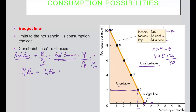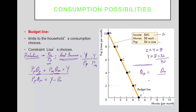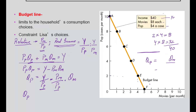Now let's write the equation for the budget line. On the y-axis we have pop as a function of the quantity of movies, so we want an equation like a minus bx to define our line. We need the quantity of pop on one side, so let's rearrange: subtract the expenditure on movies from both sides, then divide both sides by the price of pop. The quantity of pop equals income divided by the price of pop, minus the relative price of movies times the quantity of movies purchased.